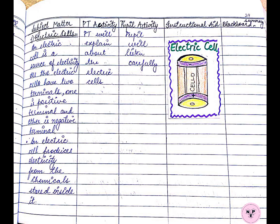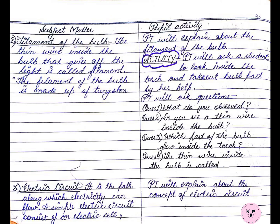Then comes the 5 columns. The first column is of the subject matter, the second column is of the PT activity — whatever the PT will be going to do in the classroom comes in that column. The third column is of the pupil activity, the fourth column is of the instructional aids or the DLM, and the fifth column is of the blackboard summary. Here I have also written an activity which is related to the filament of the bulb.